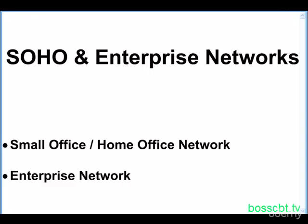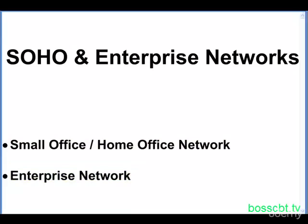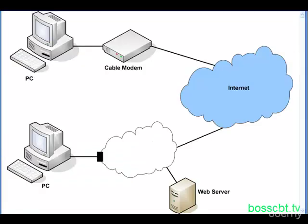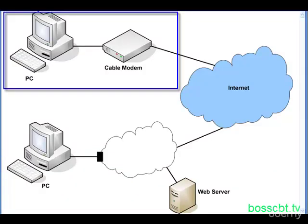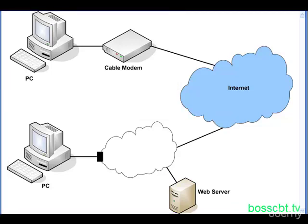First, we'll start with the SOHO Network — small office, home office — and then we'll move on to the Enterprise Network. This diagram is pretty simple: on the top we have a SOHO Network, and on the bottom we have an Enterprise Network. So let's start with the SOHO.